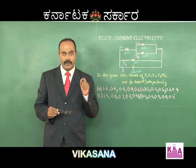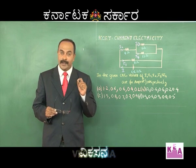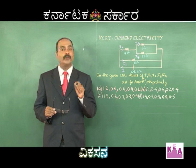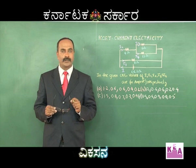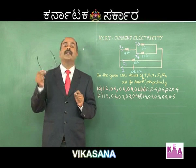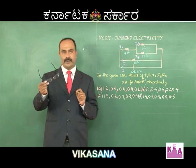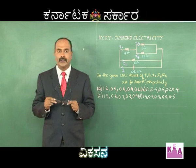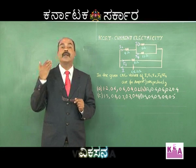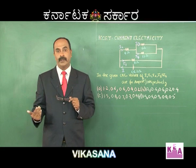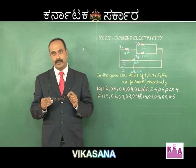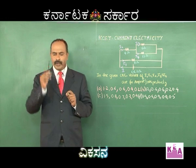Now let us discuss an IIT-level problem using shortcuts. You must know this: if the resistance is more in a parallel circuit, and resistance A is greater than resistance B, then there will be less current in A than in B. We will be using the same concept here.